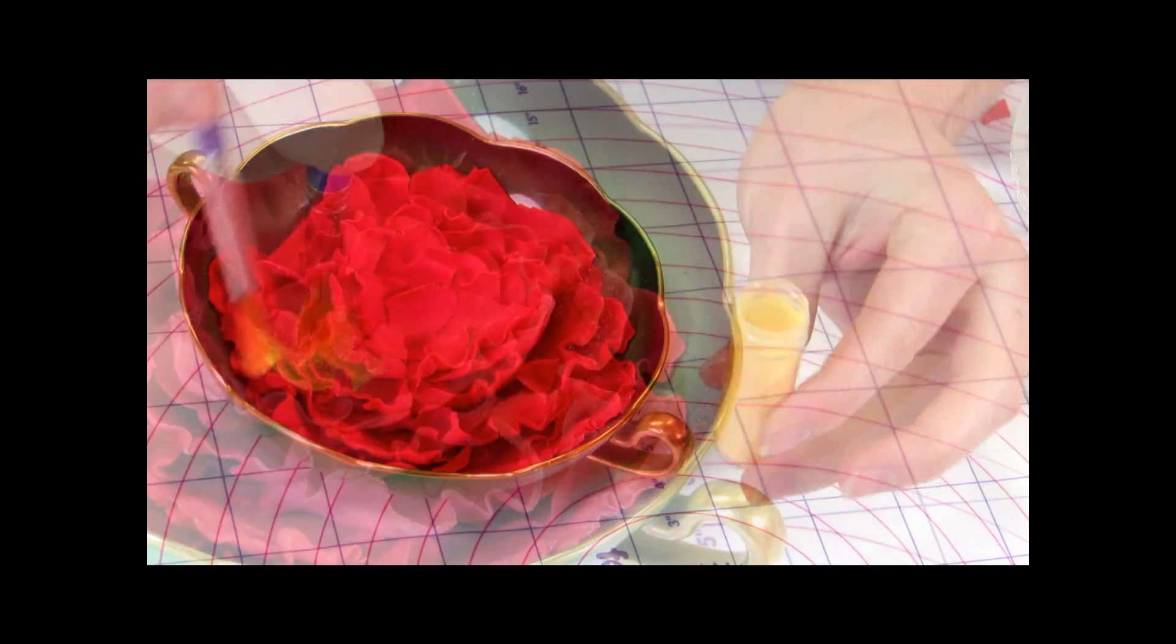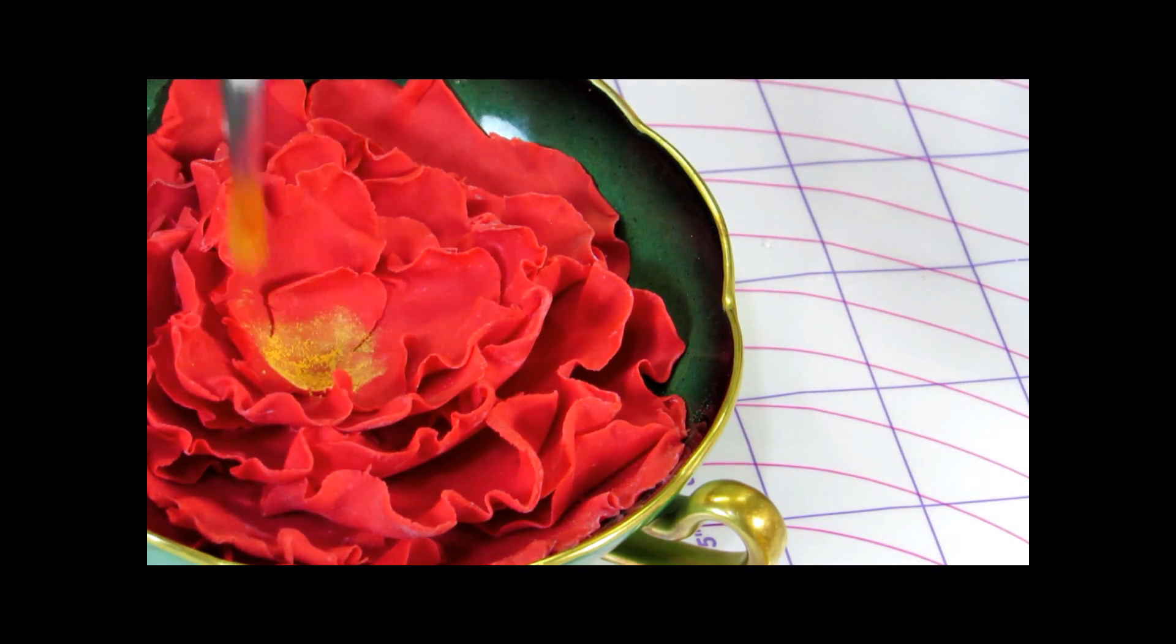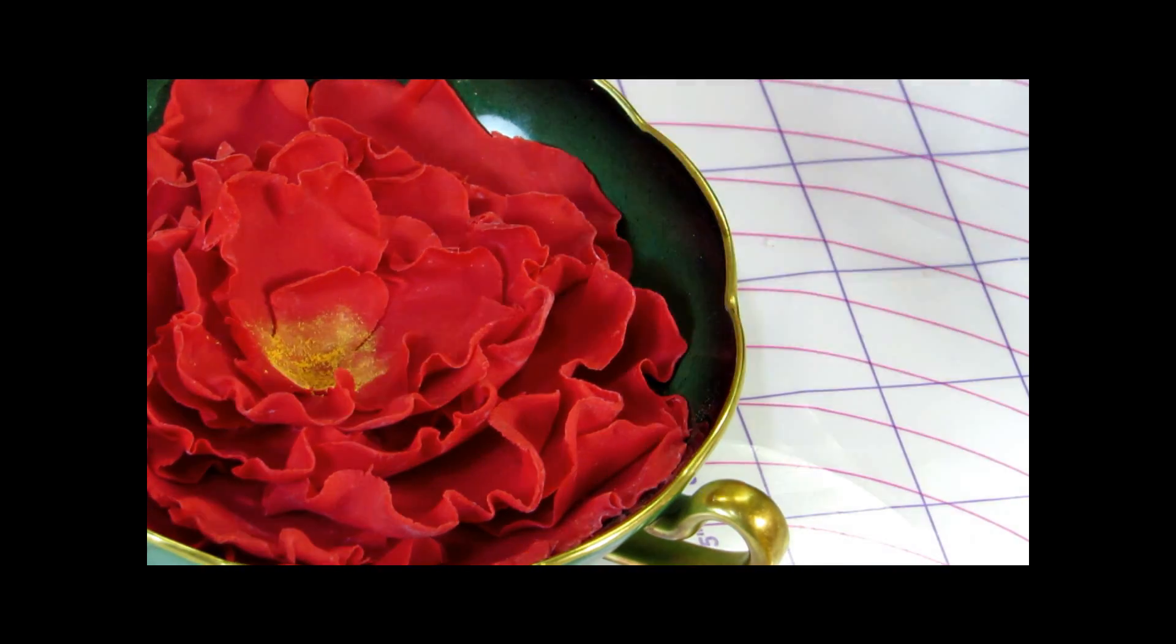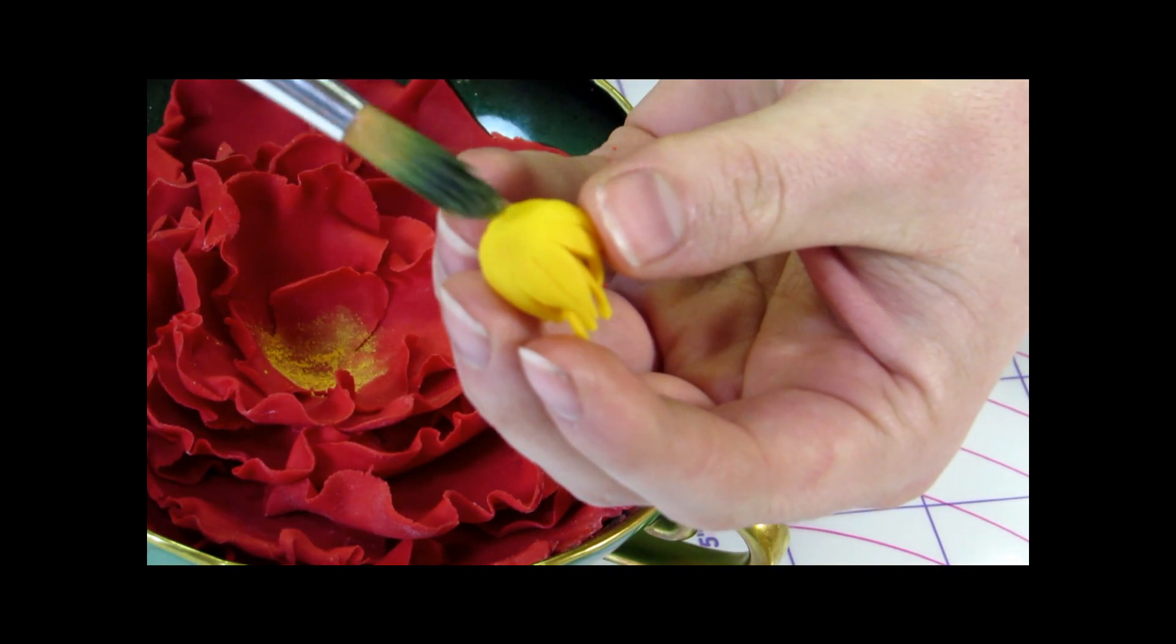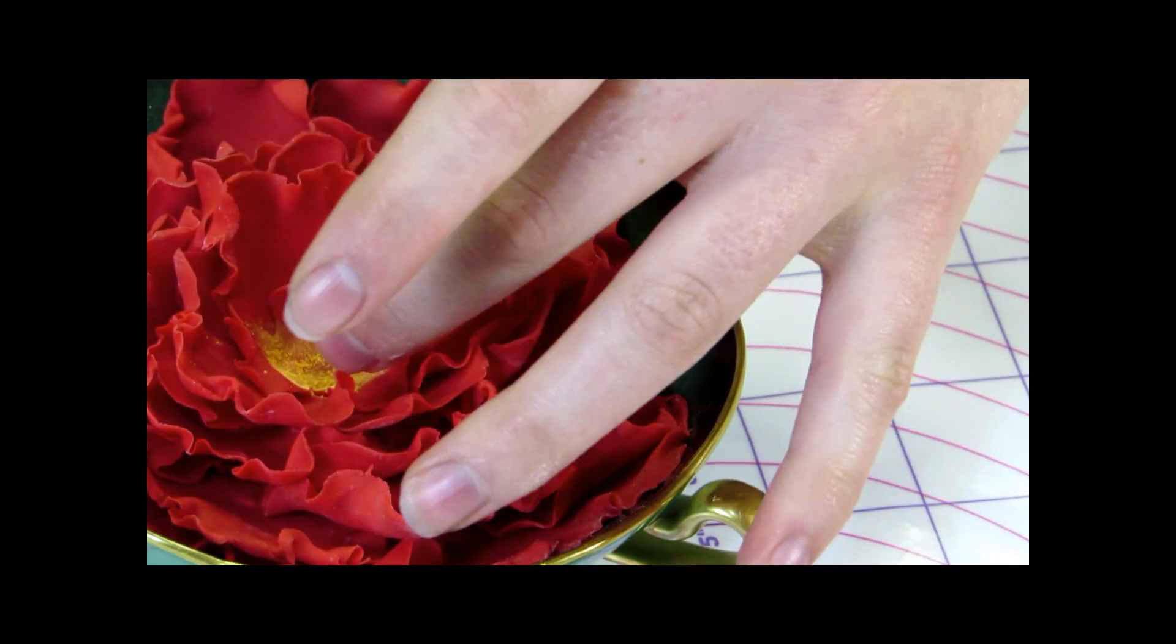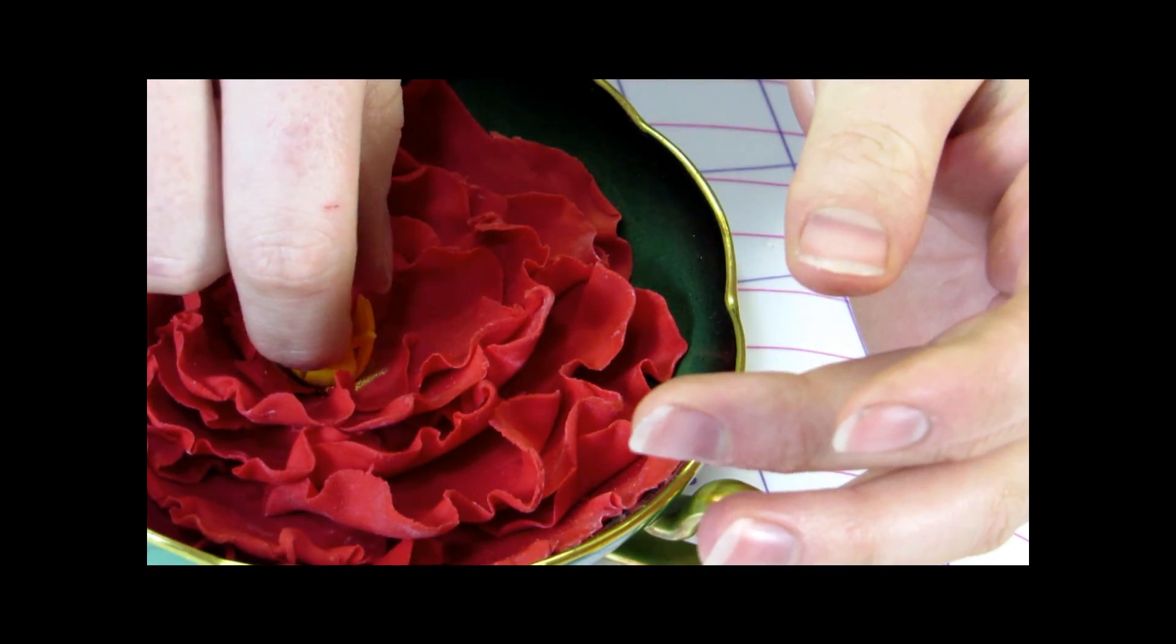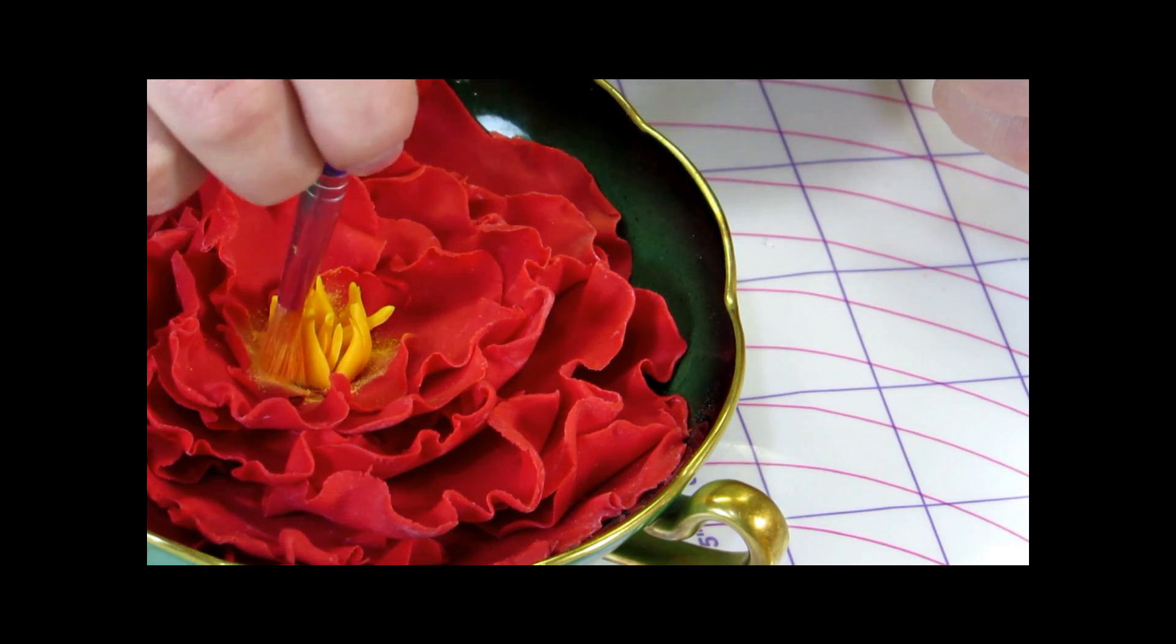I'm going to use a little bit of yellow color dust and I'm very loosely just going to dab this onto my flower. You don't want to mix it into the actual flower. You just want to dust it lightly so that way it creates a pollen look. After you've placed the center of your flower onto your flower, you can just dust a little bit more around it.